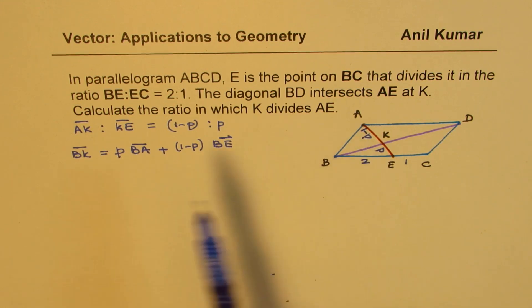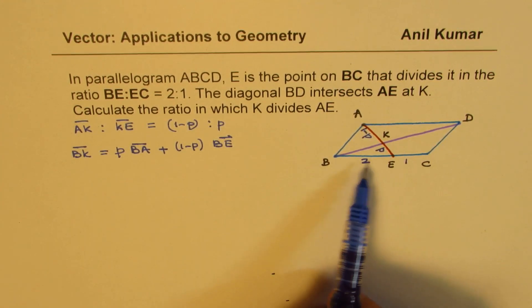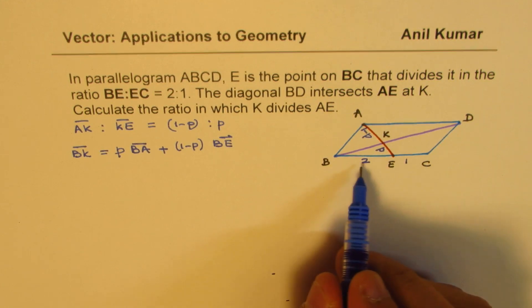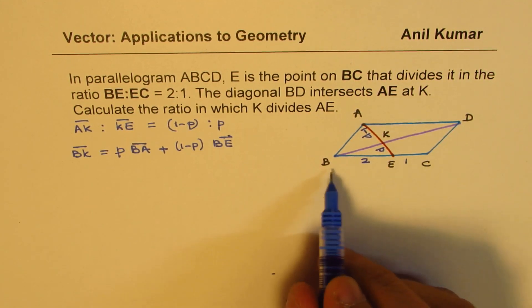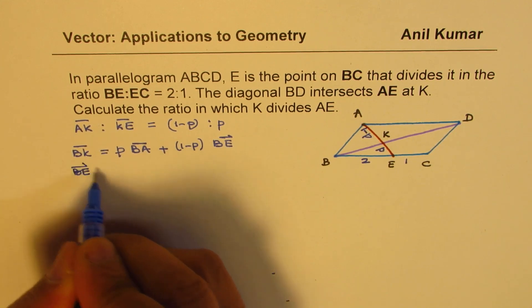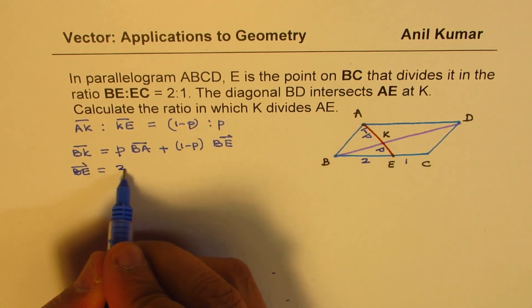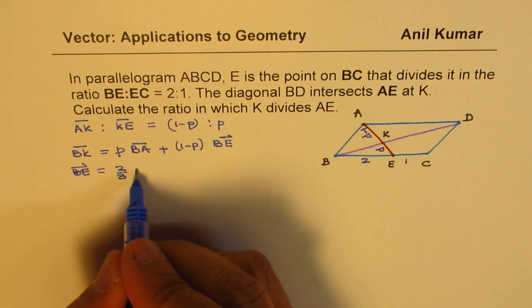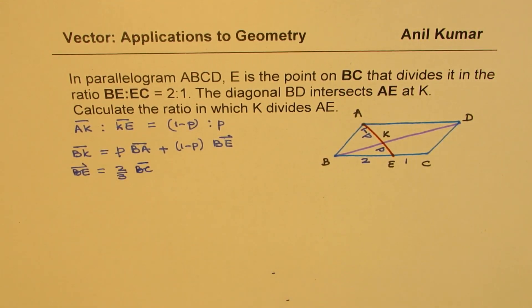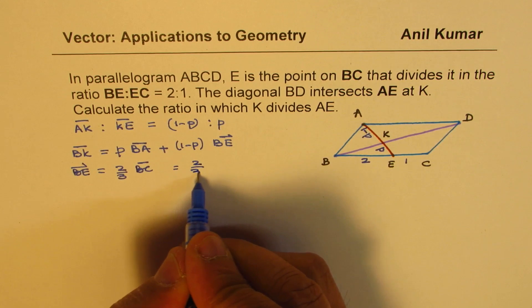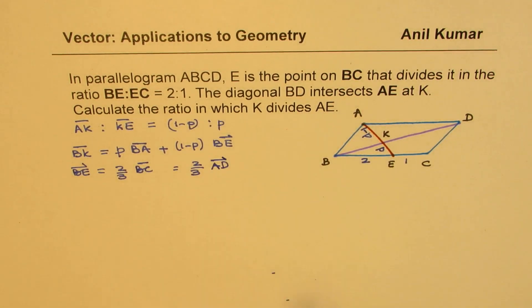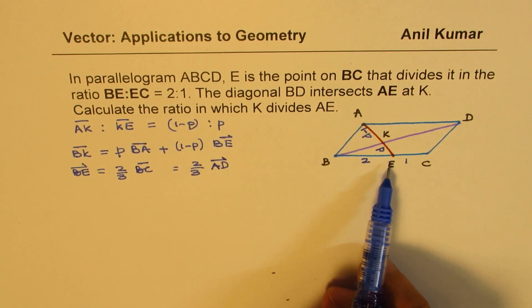P plus (1-P) is 1, and therefore the denominator 1 is not mentioned here. So that is how we can write BK. Now, we know that BE:EC = 2:1. So we can consider BE = 2/3 of BC. Now, BC = AD, so I could also write BE = 2/3 AD.